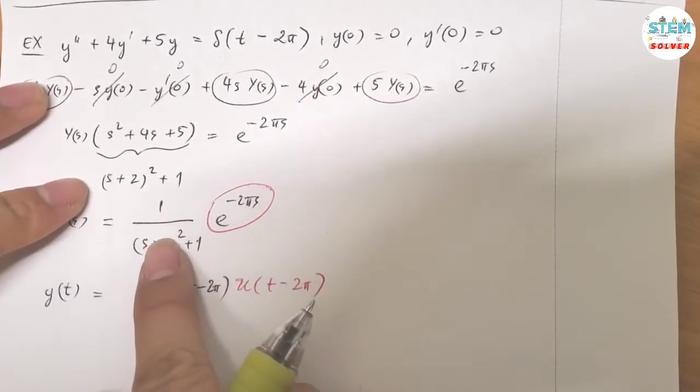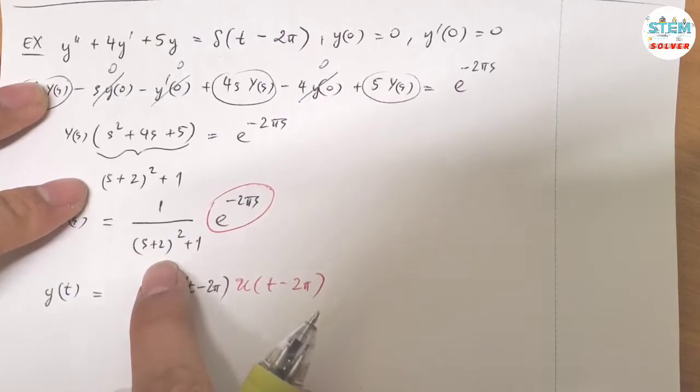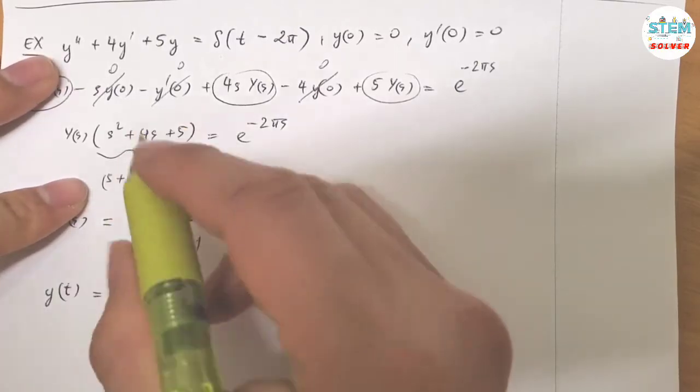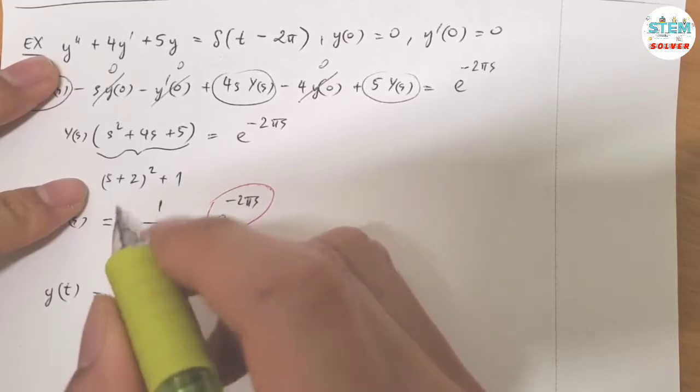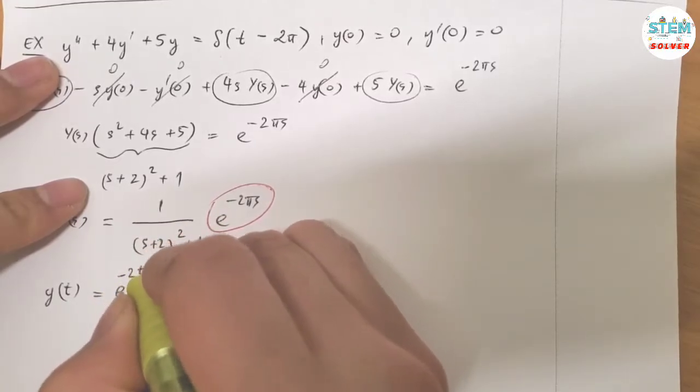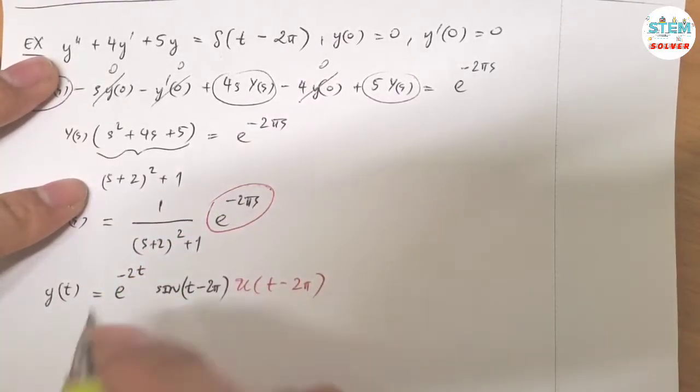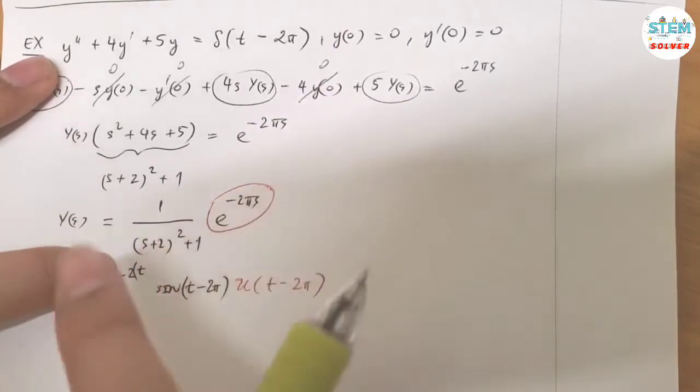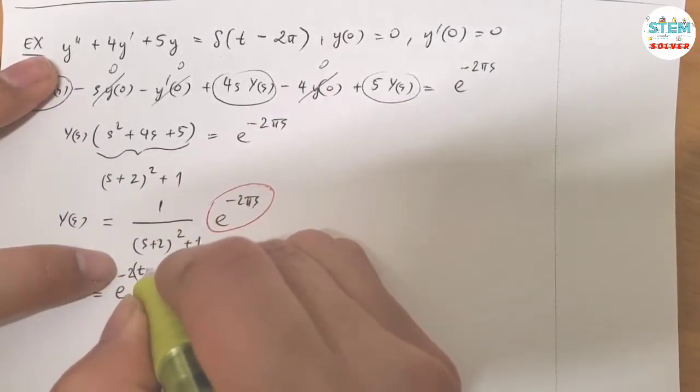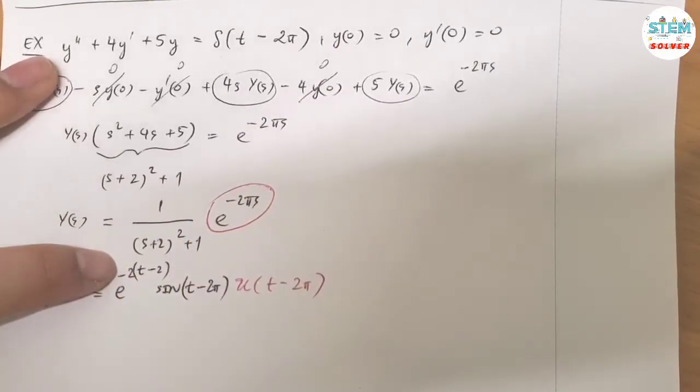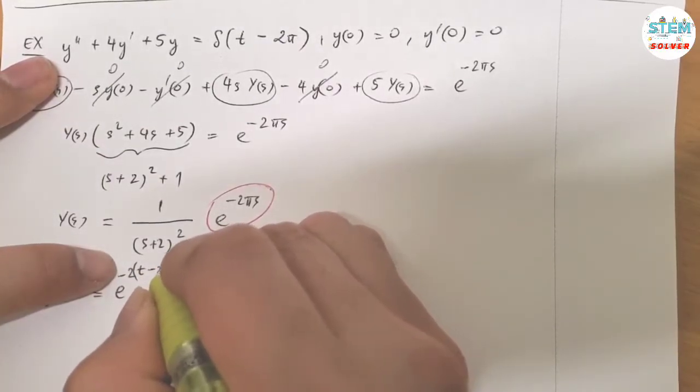Now, don't forget the shift here. So you have the shift, which means that you have e to the negative 2t. And again, the t has to match up with this t. With that being said, it's going to be negative 2 times (t-2π).